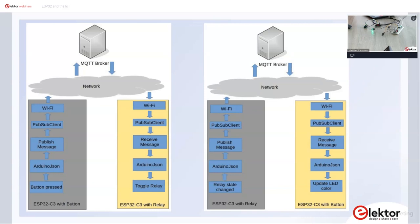The nice thing is we can add more buttons and more relays. But then it gets complicated — each button needs to subscribe to the feedback topic for the specific relay it wants to control. At that point you need some intelligence in between; the easiest way at home is using Node-RED, which can also connect to an MQTT broker, receive messages, process them, and do interesting things.